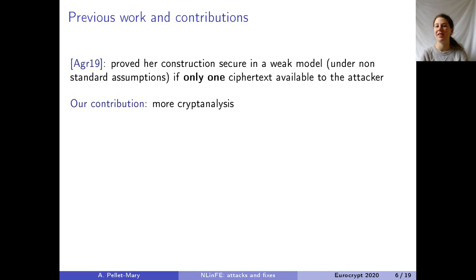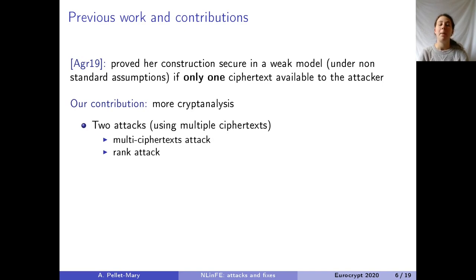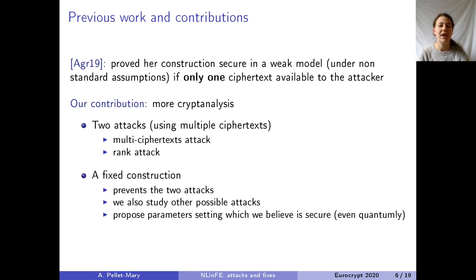Regarding the noisy linear FE construction by Shweta, she already did some analysis and proved that under a non-standard assumption, if the adversary has only access to one ciphertext, then the scheme should be secure. This single-ciphertext assumption is problematic for concrete applications: when bootstrapping noisy linear FE to obfuscation, the adversary has access to more than one ciphertext. We studied the construction in more detail and found two attacks, both using at least two ciphertexts — so not a contradiction with Shweta's proof. We call them the multi-ciphertext attack and the rank attack. We also derived a fixed construction and proposed parameters for which we believe the scheme is secure.